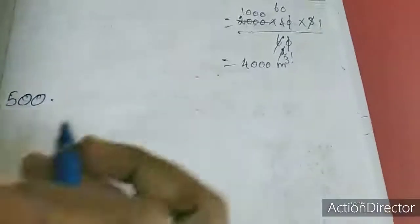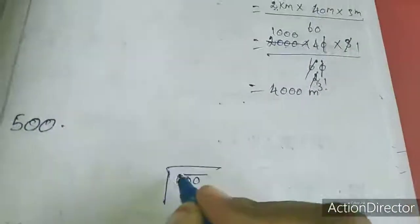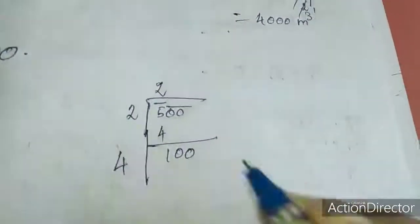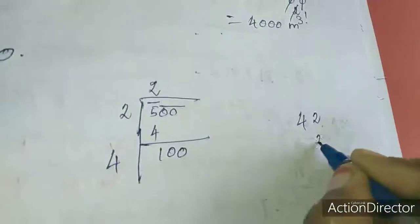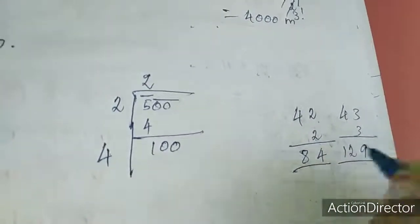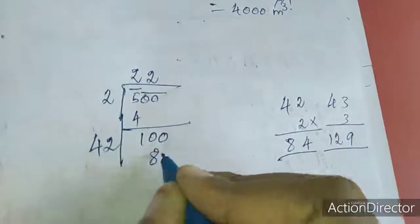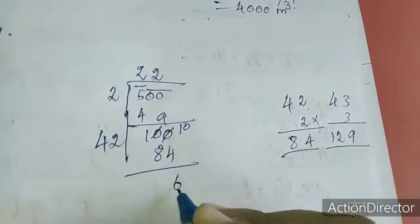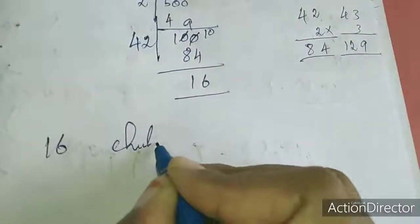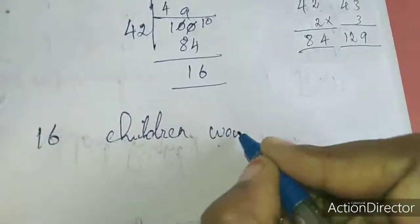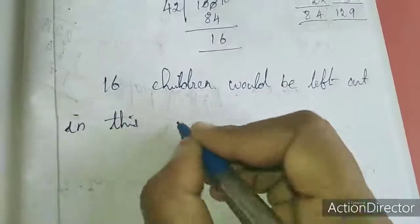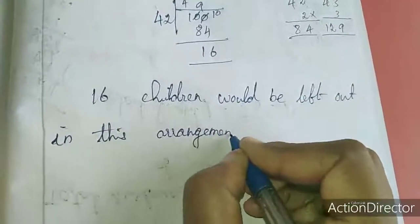I am going to work out. So 500 is the square root. Calculating: we want to find how many children would be left out. 16 children, 16 children would be left out in this arrangement.